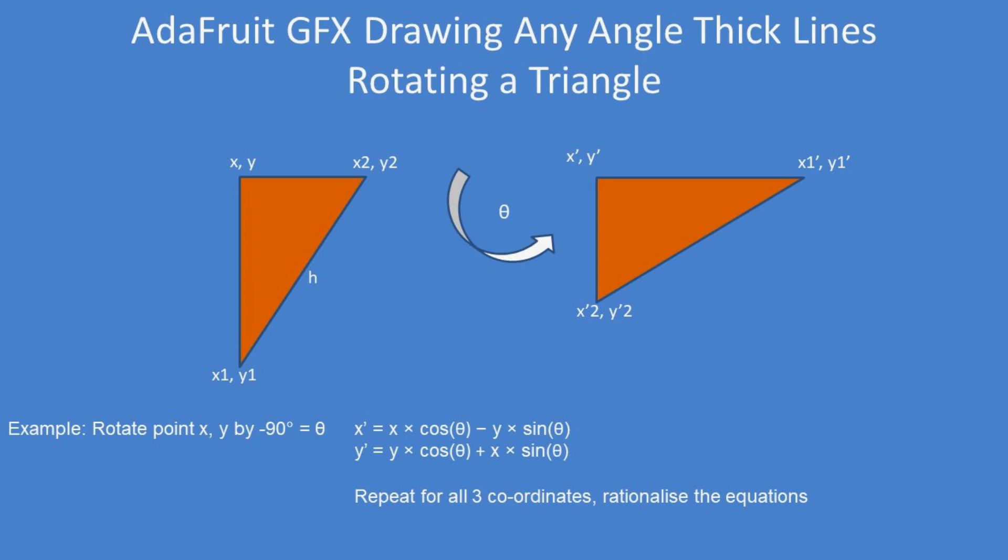In that example there, I'm showing it being rotated by minus 90 degrees. That means rotate anti-clockwise by 90 degrees, and you apply those formulas there for x and y to all three coordinates.